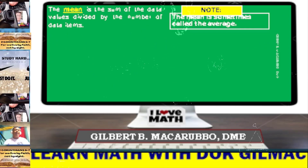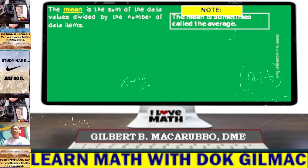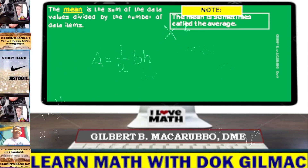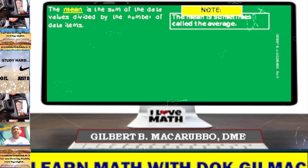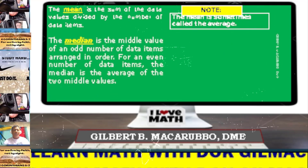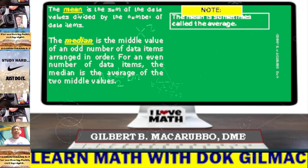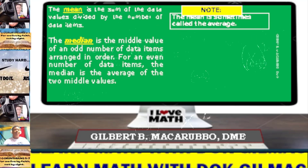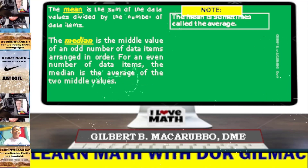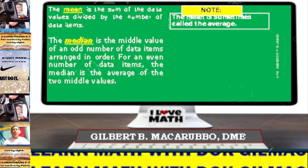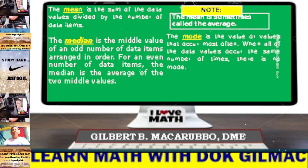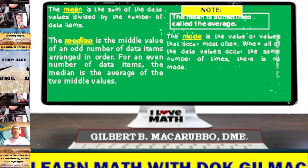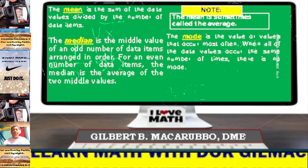The mean is the sum of the data values divided by the number of data items. Take note class, the mean is sometimes called the average. The median is the middle value of an odd number of data items arranged in order. For an even number of data items, the median is the average of the two middle values. The mode is the value or values that occur most often — the most frequent score.